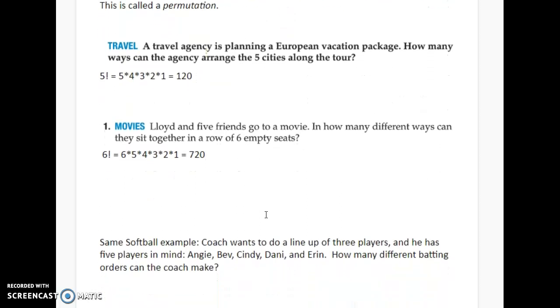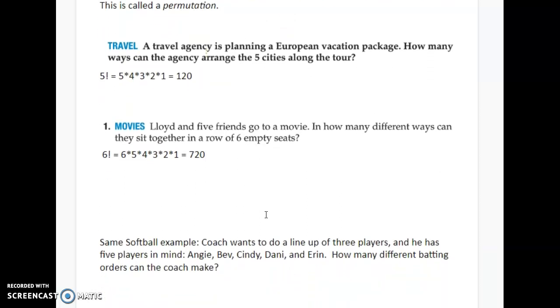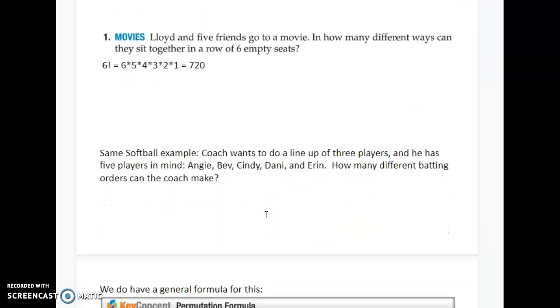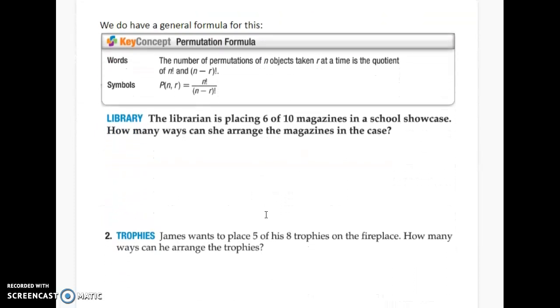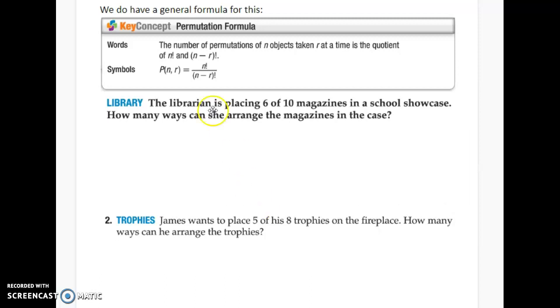Now, sometimes we have more people than we have spots for. So, for example, coach wants to do a lineup of three players. He has five players to fill the spots. If we were in class, I'd have us do this by hand together. Instead, I'm just going to skip to the general formula for this, which is, notice how I read this, the permutations of N choose R equals that formula there. So, N is going to be the total number of objects. R is going to be the number of objects we're choosing.